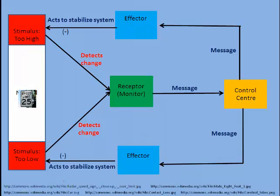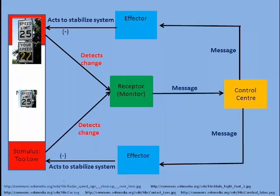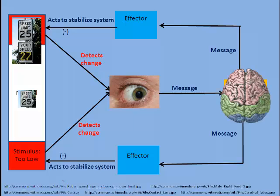Let's say the speed limit is 25 km per hour, and we want to stay within that normal range, but we get distracted and find that our speed is actually straying beyond 25 — it's up to 27. We would detect this change, hopefully, and a message would be sent to the control center of the brain, and the brain would act accordingly.